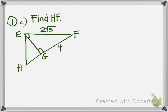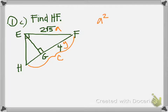Here is number 1c. The directions say to find hf. From the way this picture looks, this is a problem from 9.3. We have a right triangle and its altitude from the right angle hits the hypotenuse — it's called the altitude on the hypotenuse. We've got three equations we can use. We need to find hf, which we represent with c. The 2√5 we represent with a, and the 4 we represent with y. The equation we will use is a² = y × c.